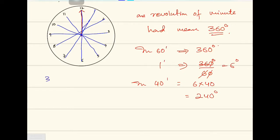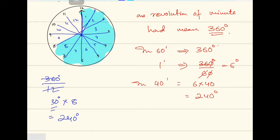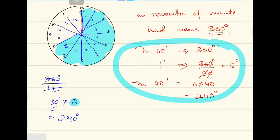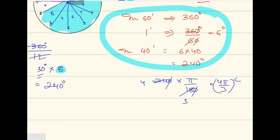Another explanation: divide 360 into 12 equal parts — one for each hour marking — that gives 30 degrees each. 40 minutes corresponds to 8 divisions, so 30 times 8 equals 240 degrees. That's done by the unitary method. So the angle is 240 degrees. Converting to radians: 240 times pi by 180 simplifies to 4 pi by 3 radians.